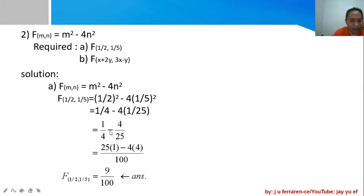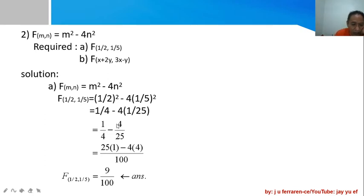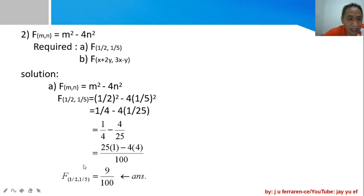Subtracting these fractions: the LCD of 4 and 25 is 100. For 1/4: 100 ÷ 4 = 25, so 25/100. For 4/25: 100 ÷ 25 = 4, so 16/100. Combining the numerators: 25 - 16 = 9, over the common denominator 100. So when m = 1/2 and n = 1/5, the function value is 9/100.